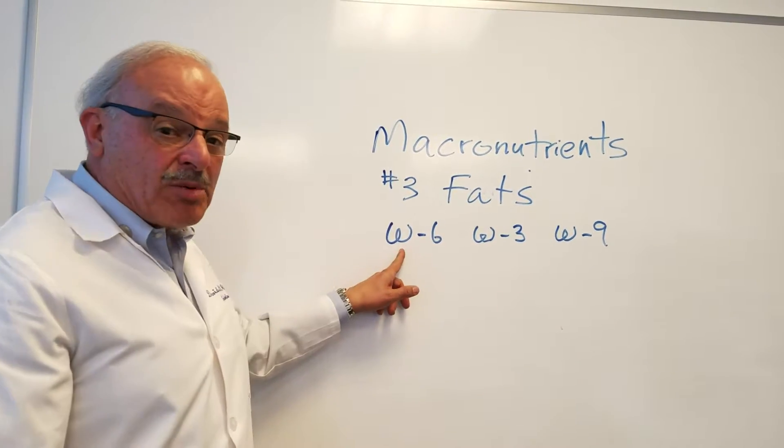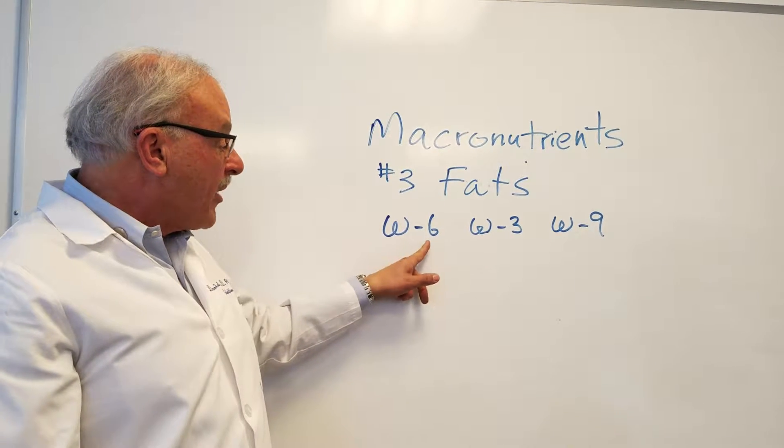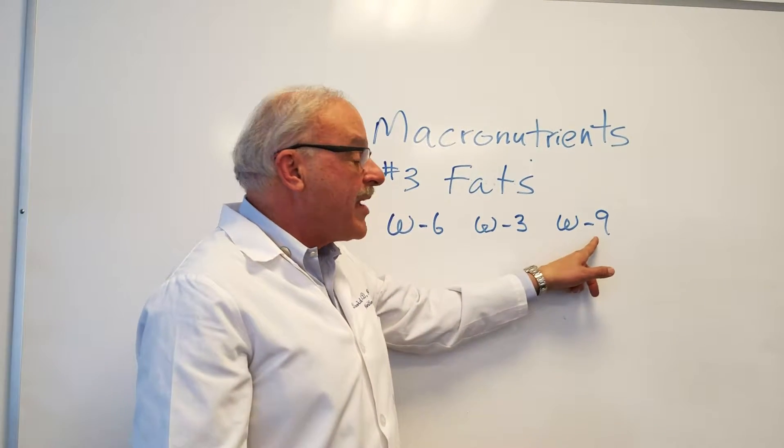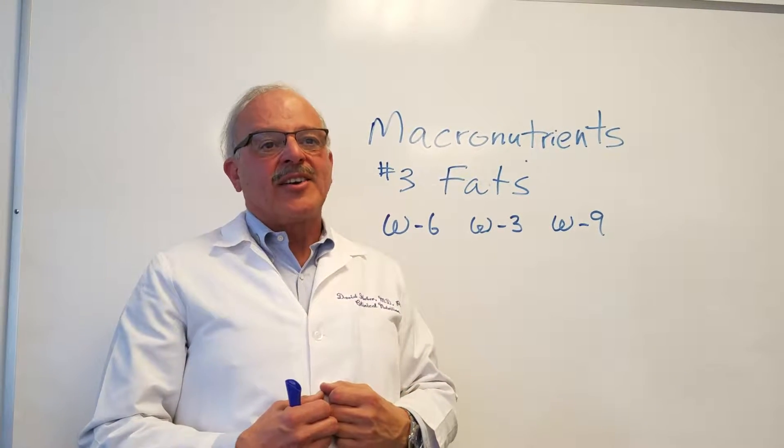Now, this little funny-looking W here, that's an omega. That's a Greek letter omega. And we talk about omega-6, omega-3, and omega-9 fats. These are the three major chemical forms of fat in our diet.